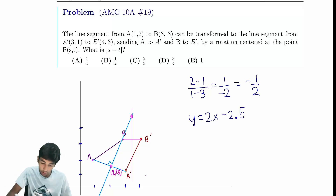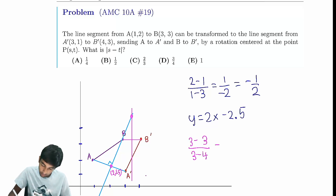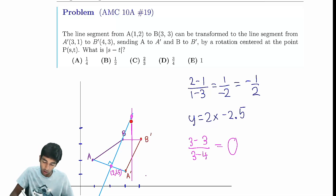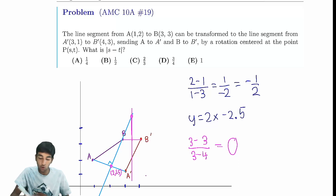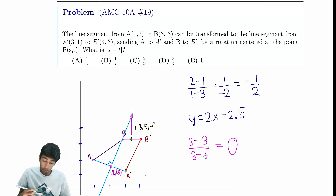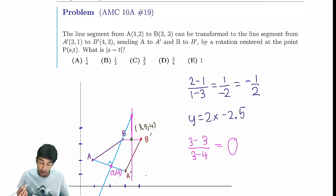The second line is simple as well. The slope from B to B' is (3 minus 3) over (3 minus 4), which is just 0. So the slope of the perpendicular bisector of BB' is infinity — it's a vertical line of the form x equals something. The midpoint of BB' is (3.5, 4), so the x-coordinate is fixed, giving us x equals 3.5.